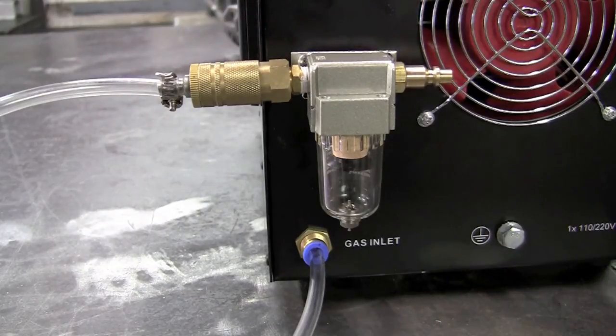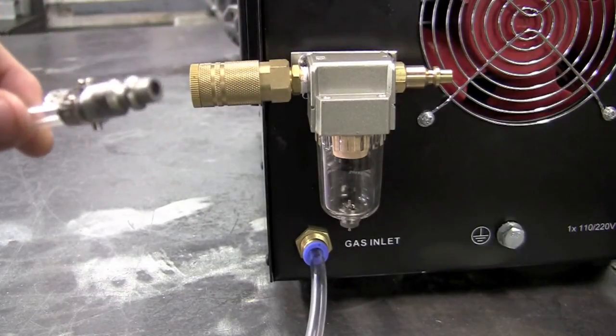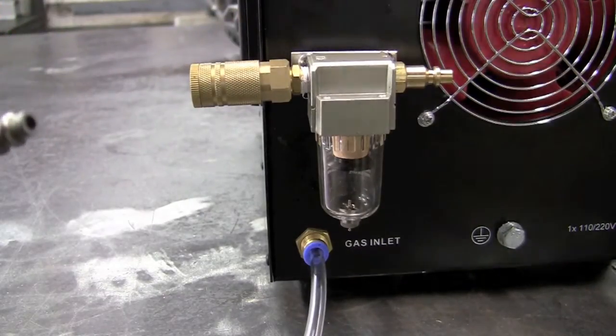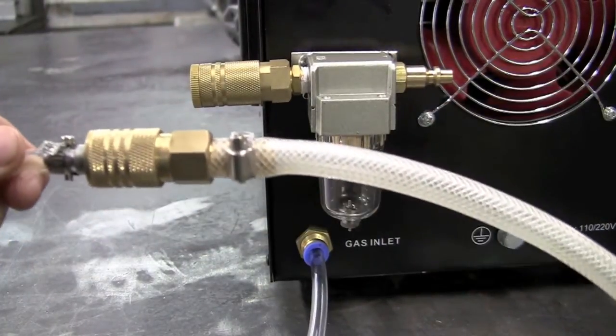And then when I want to do some TIG welding, I simply just disconnect, and then I would plug this into my argon regulator. And now we're ready to go for the TIG process.